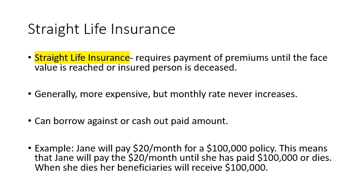One of the benefits of straight life insurance is that your monthly rate — the amount that you pay every month, or maybe every six months — is never going to go up. It always stays the same, so you know exactly how much you need to budget for month to month.